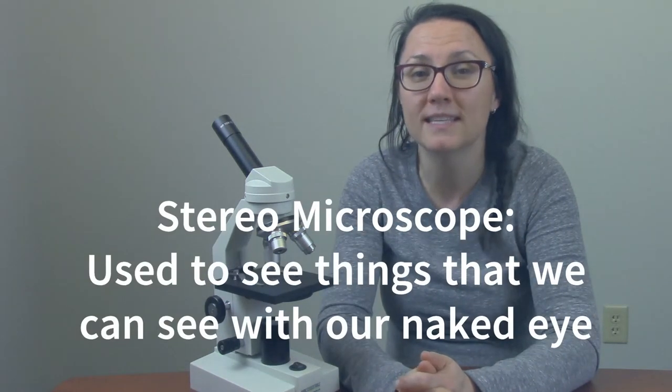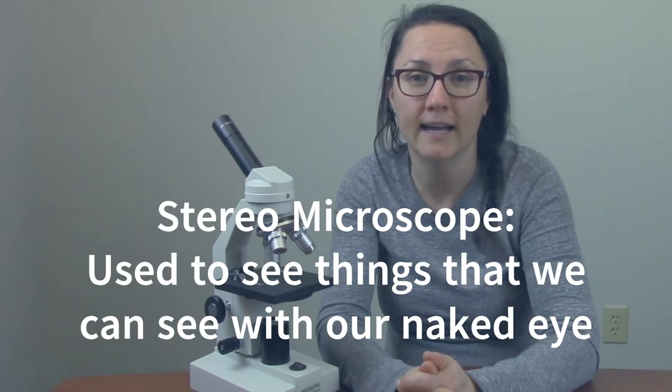A stereo microscope is used to see things that we can see with our naked eye. Examples like rocks, gemstones, insects, coins, and plants are things that you can view through a stereo microscope.